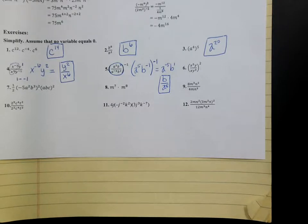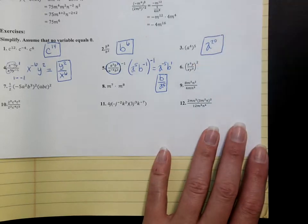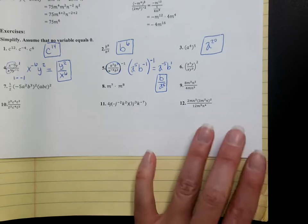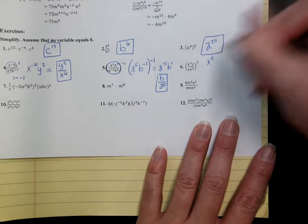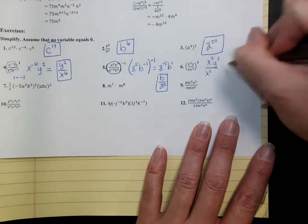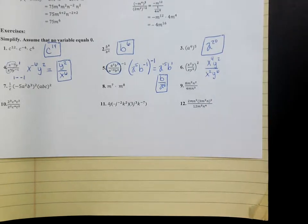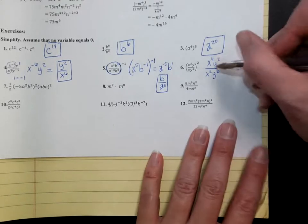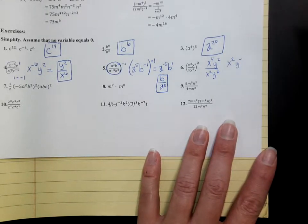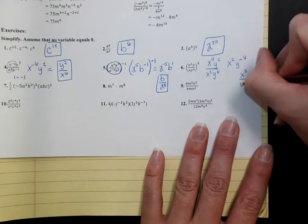Same thing on the next one — you pick the method you want to do. You could simplify the inside first and then square everything, or you could square everything to start and then simplify. I'm going to square everything first. If I square x squared, that's x to the 4th. If I square y, that's y squared over. If I square x, that's x squared. If I square y cubed, that's y to the 6th. Now from here, I can just simplify — subtract your exponents. 4 minus 2 is x squared. 2 minus 6 is y to the negative 4th. Take those negatives and put them in the denominator. That's x squared over y to the positive 4th power.